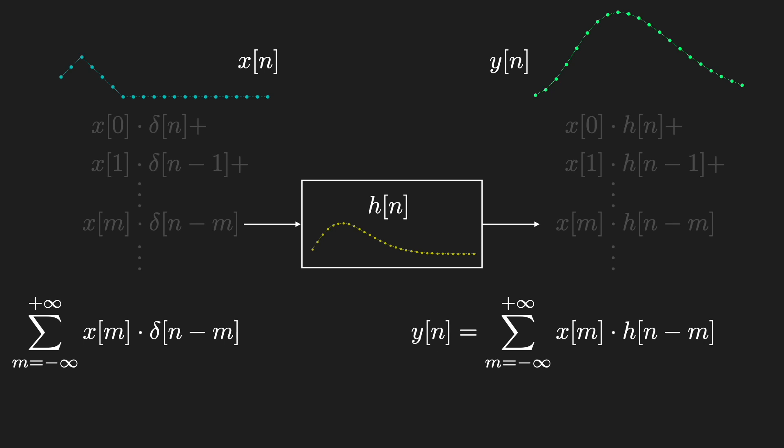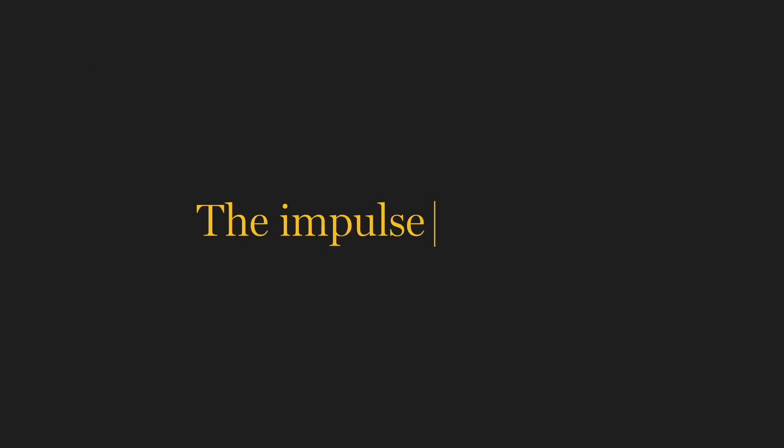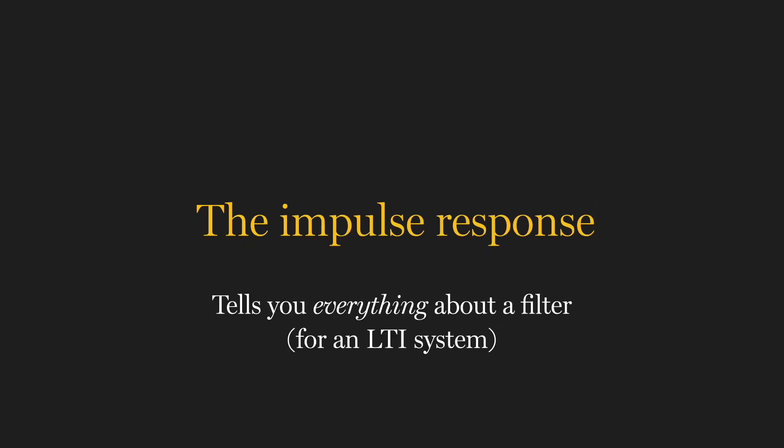This should look familiar. In fact, it's convolution. This is why convolution works. It is simply the superposition of scaled and shifted impulse responses h. And this highlights how for LTI and only LTI systems, the impulse response tells you everything. It fully characterizes the system, allowing us to compute the output for any input signal.